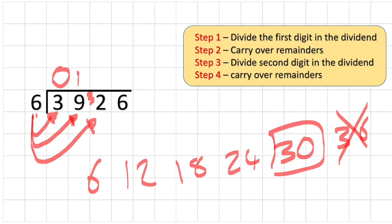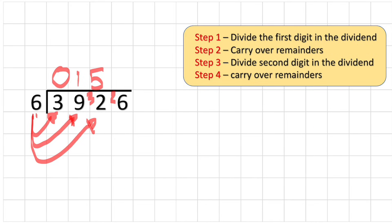How many sixes in 32? 6, 12, 18, 24, 30, 36. Can't go that far, so this is as close as I can get, and that's one, two, three, four, five groups. But I needed to get to 32. What's the difference between 30 and 32? 2. So I bring my two into my last column and make the six a 26.